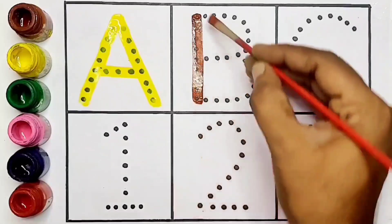A, A for apple. B, B for ball. C, C for cat. 1, 2, 3.